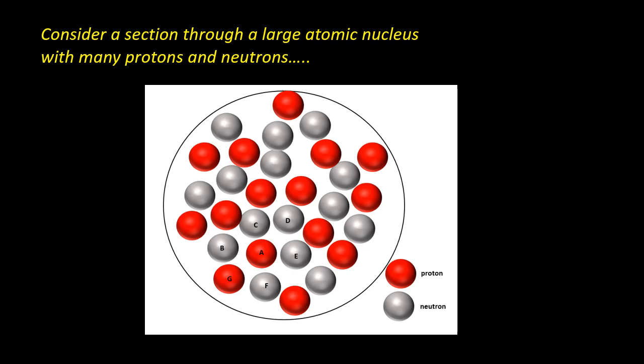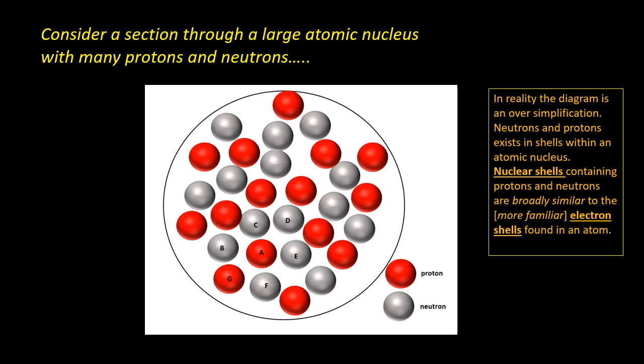Consider a large nucleus such as the one shown here, then imagine a single proton, which we're going to mark with A. This proton is only attracted to its neighboring nucleons, so that's B, C, D, E, F and G, by the nuclear force. The other nucleons in the nucleus will be too far away to have any significant attractive force on proton A. However, proton A will feel repulsive electrostatic force from all protons in the nucleus.